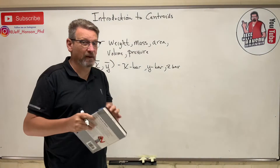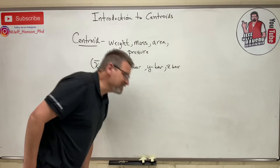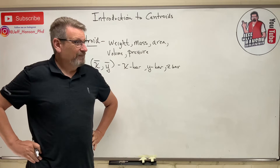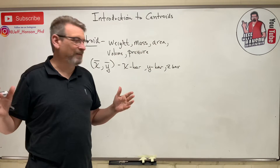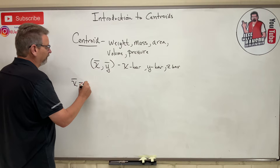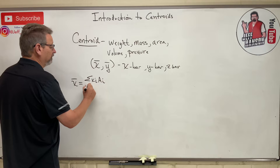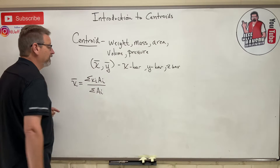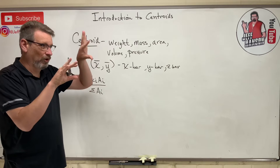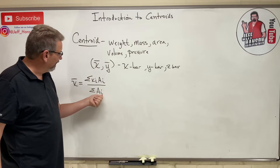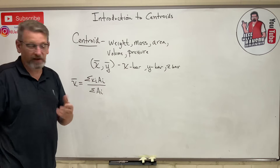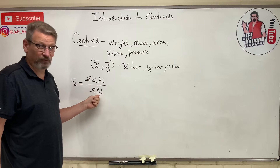We'll also be deriving where these come from. This chapter may have our first actual equation of the semester: x-bar equals the sum of x-sub-i times A-sub-i, divided by the sum of A-sub-i. The sub-i indicates how many elements you have — if you have a complex shape divided into seven parts, you'd have A1, A2, A3, and so on, then add them all up.